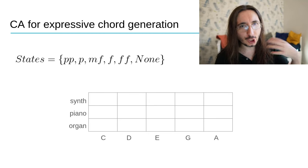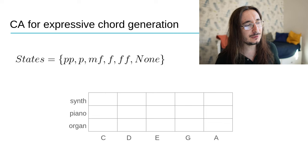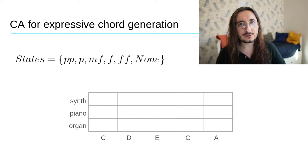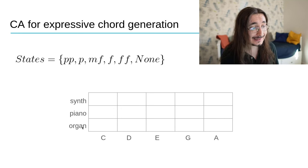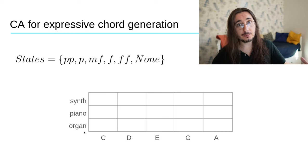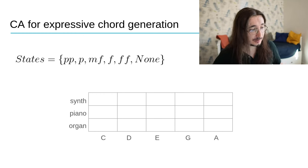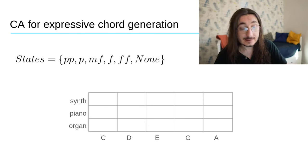I want to show you a more complex example. With this cellular automaton, we generate expressive chord progressions. We'll be dealing with four parameters at once. On the x-axis, we have different pitches. On the y-axis, we have different instruments. So, these pitches can be played by different instruments, like an organ, piano, or a synthesizer.